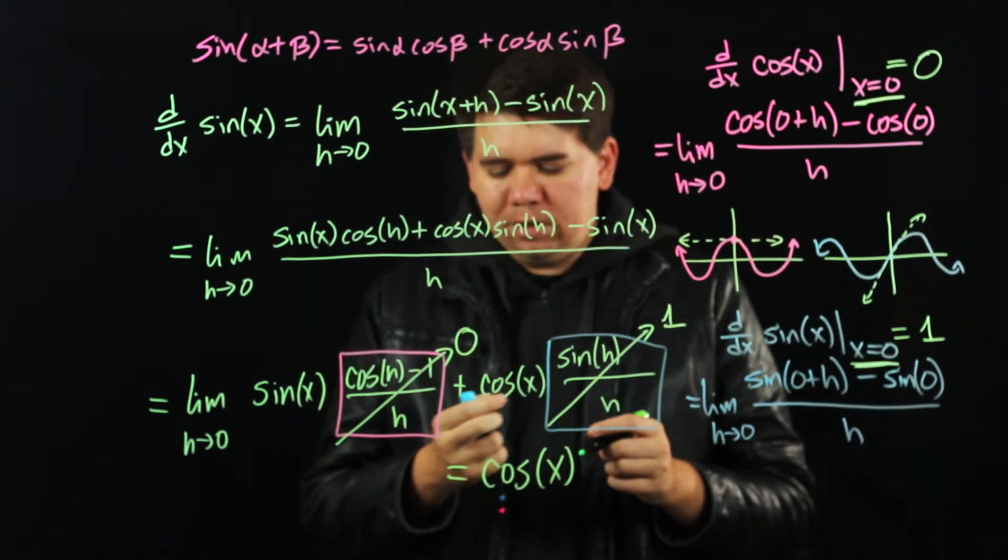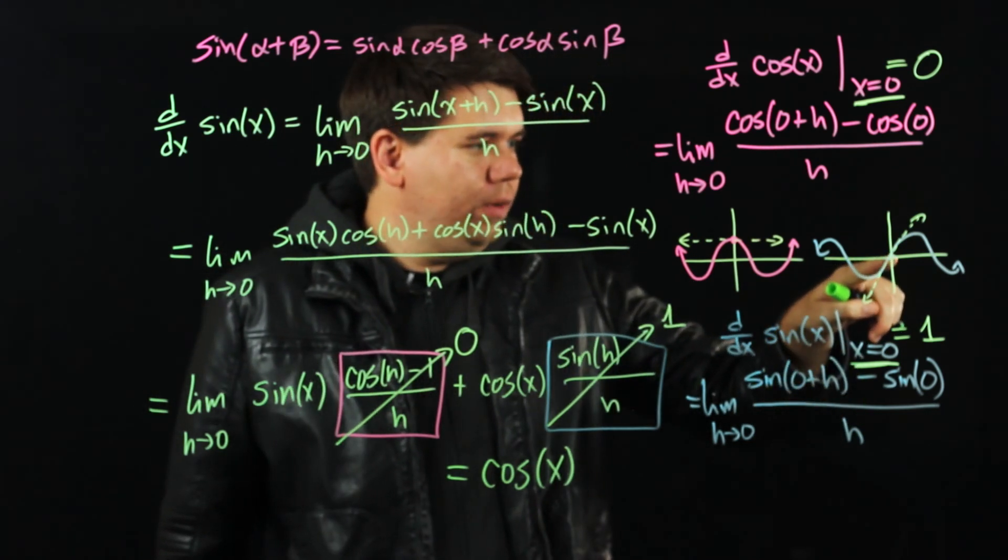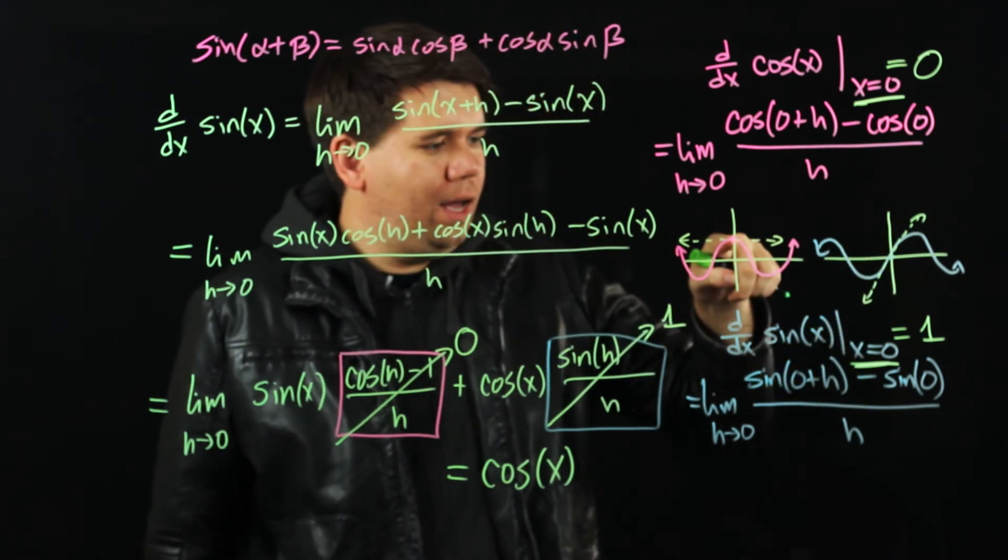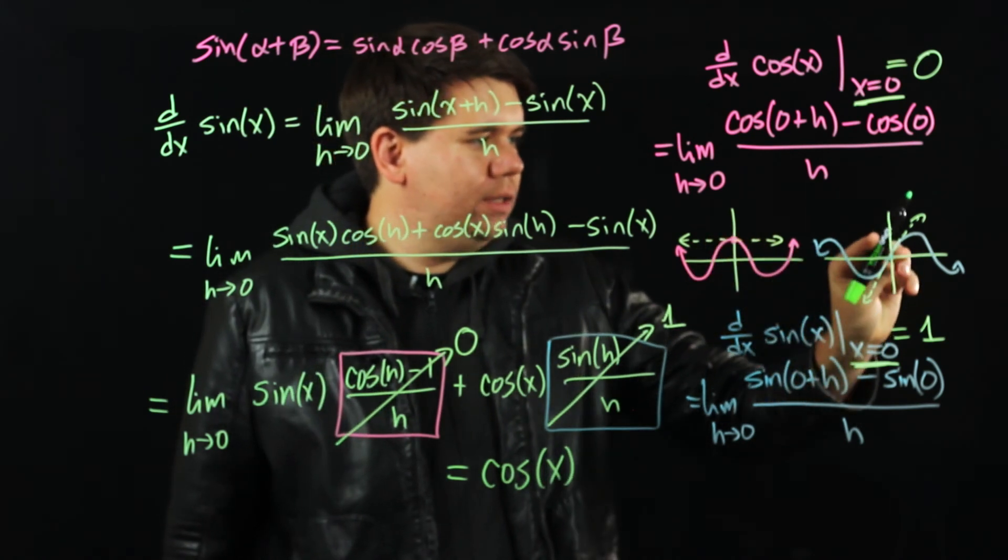You should look at the graphs and convince yourself that this is true. When you start off, you have a slope of 1. And sure enough on the cosine graph you're at 1. But as you move along the sine graph, you come to a slope of 0.